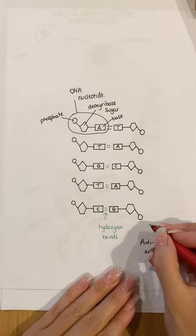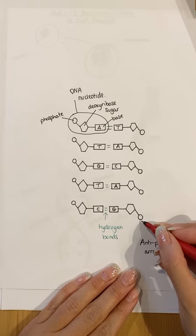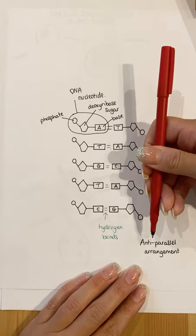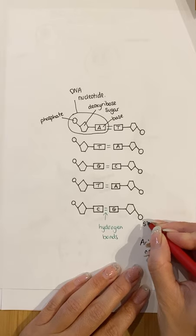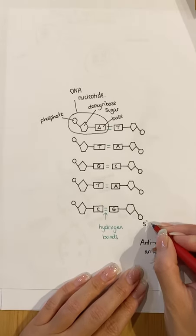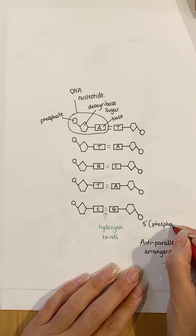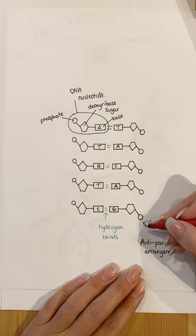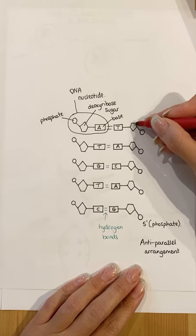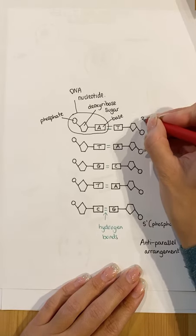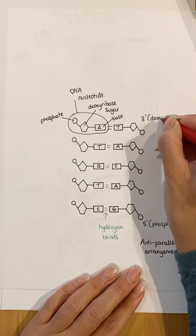I'll explain what that means. This end ends in a phosphate and it's pointing this way. When we have a phosphate at one end of a strand, it is known as the five prime end, because it ends in a phosphate. If we follow this strand up the way, this one ends in that deoxyribose sugar, and therefore this end is called the three prime end.